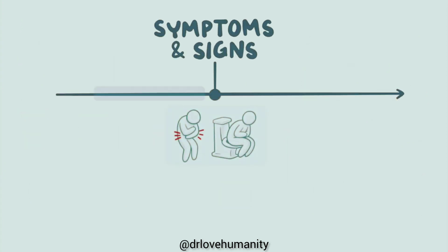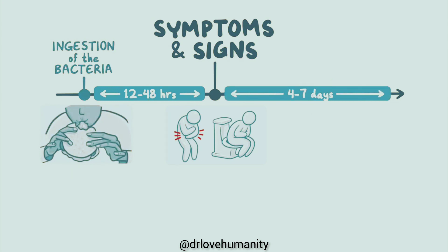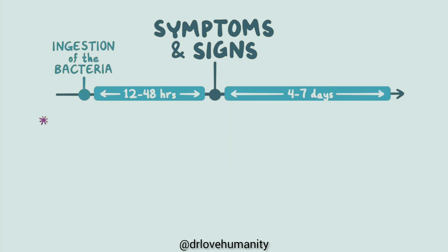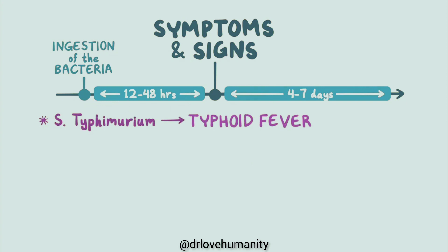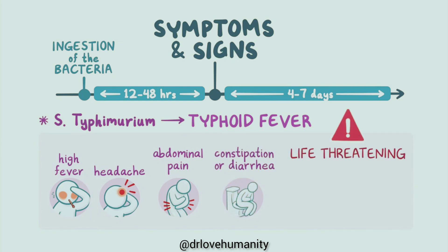These symptoms and signs usually arise in humans between 12 and 48 hours after ingestion of the bacteria, and typically last for 4 to 7 days. The Salmonella typhimurium serotype can cause typhoid fever, which is characterized by similar symptoms including high fever, headache, abdominal pain, and either constipation or diarrhea. Unlike most other salmonella infections, typhoid fever can be life-threatening and often requires antibiotic treatment.